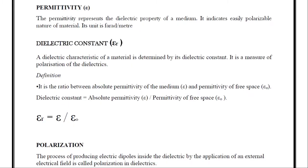Permittivity: The permittivity represents the dielectric property of a medium. It indicates whether a dielectric is easily polarizable or not, and it depends upon the nature of the material. Its unit is farad per meter. The definition of polarization will be covered in the next section.